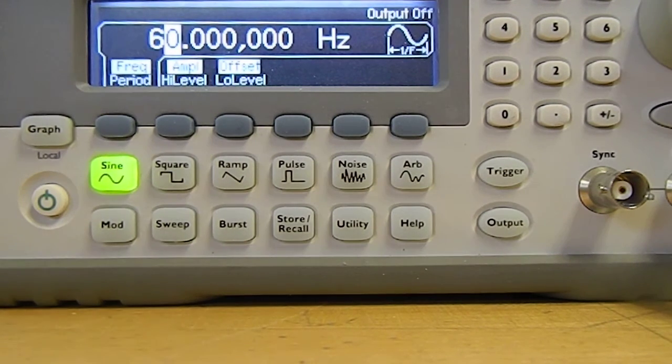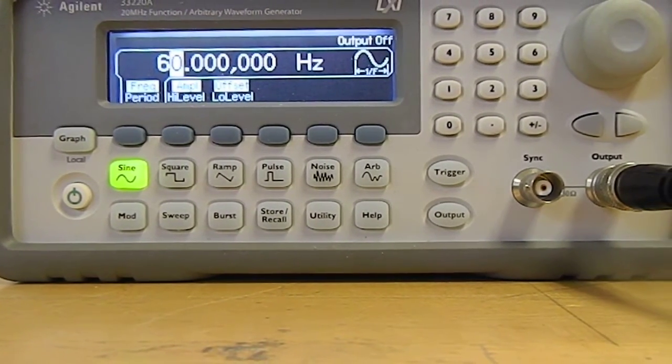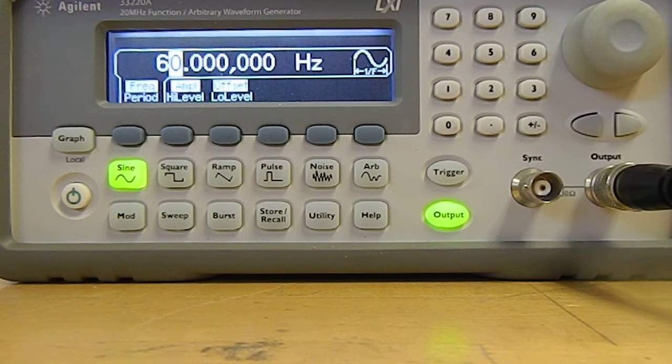Alright, so once you have all of your settings the way that you would like them, you actually need to click on something before you can actually get any output. And that's simply output. And when output lights up green, then you are able to send an output out.